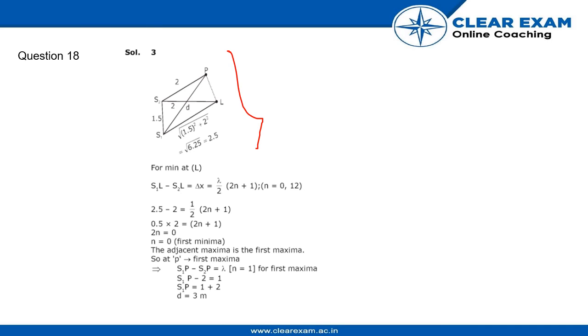Solving: 2n equals 0, n equals 0. This is the first minima. The adjacent maximum is the first maxima.